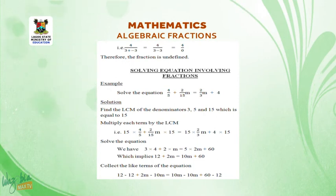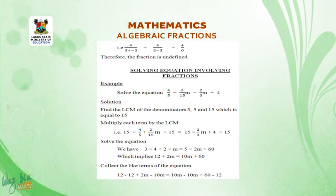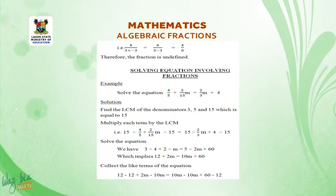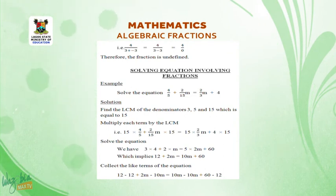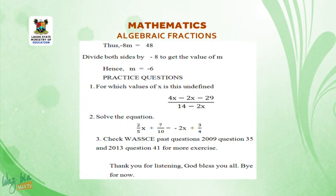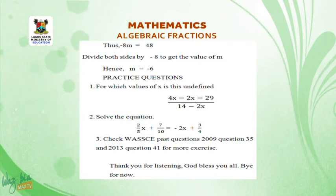This implies 12 plus 2m equals 10m plus 60. Collecting like terms: 12 minus 12 plus 2m minus 10m equals 10m minus 10m plus 60 minus 12. Thus, minus 8m equals 48. Divide both sides by minus 8 to get the value of m. Hence, m equals minus 6.